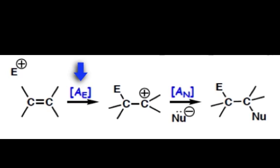So pi bond breaking and sigma bond formation for the AE step, followed by sigma bond formation in the A sub N step.